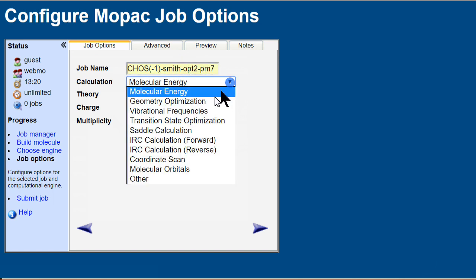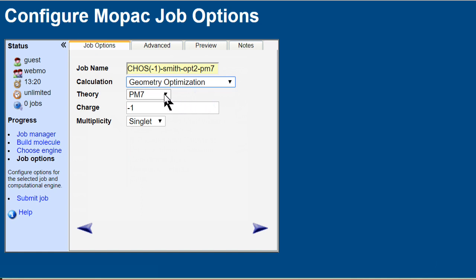PM7 is the default method, but MOPAC has several different codes built in. The charge is minus 1 and the multiplicity is singlet because there are no unpaired electrons. Click continue to submit the job.